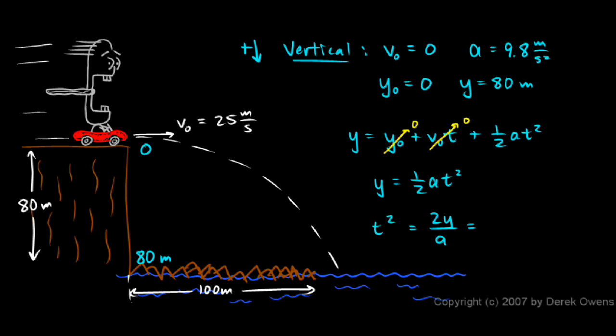I can put in some numbers here: 2 times 80 meters divided by 9.8 meters per second squared. My meters will cancel, I'll have units of seconds squared, which makes sense for t squared. And when I do the math, t squared comes out to 16.3 seconds squared. I take the square root of that to find t, and t comes out to be 4.04 seconds.